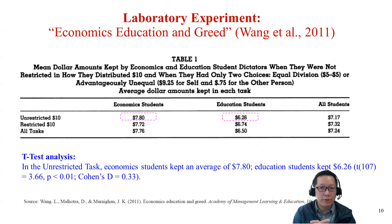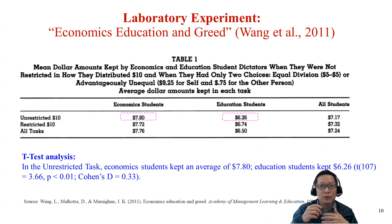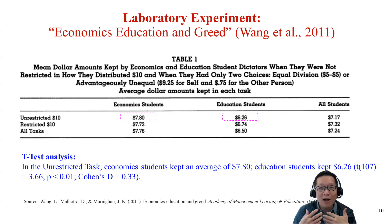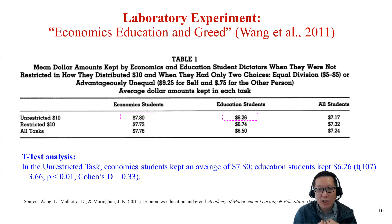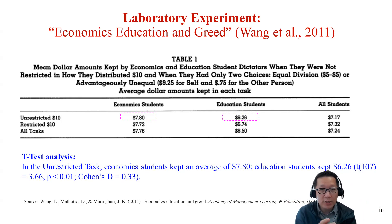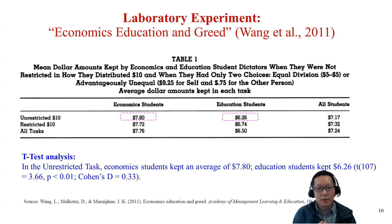In the unrestricted game, the player could choose to keep the whole $10 or give it away. In the restricted game, they needed to partially give away some money. The results showed that economics students kept $7.80 on average compared to education students who kept $6.26. In the restricted game, economics students still kept more — $7.72 versus $6.74 for education students.